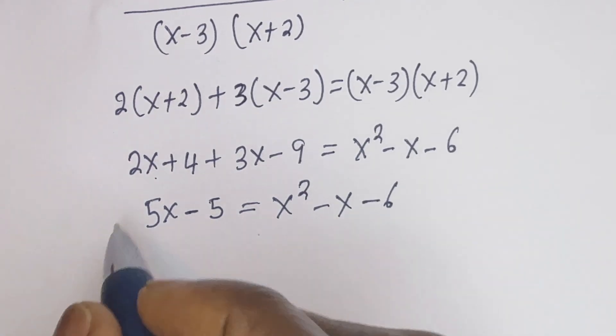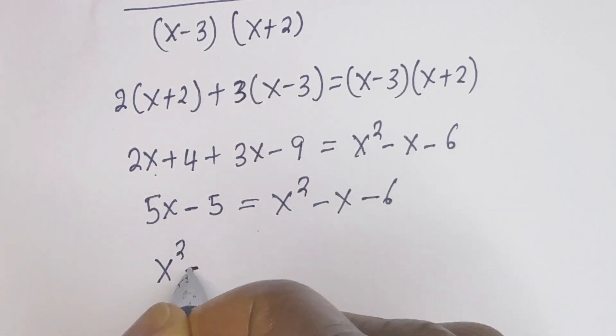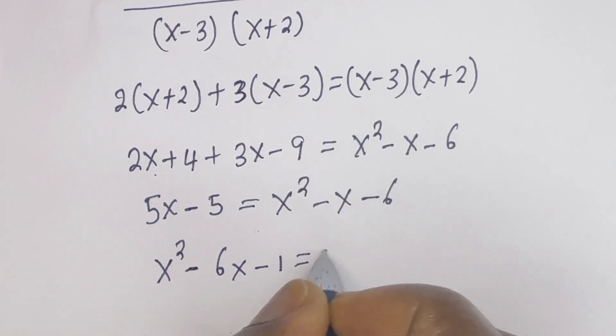Let's equate everything to 0. We have x squared minus 6x minus 1 is equal to 0.